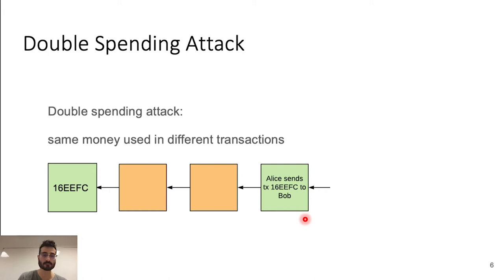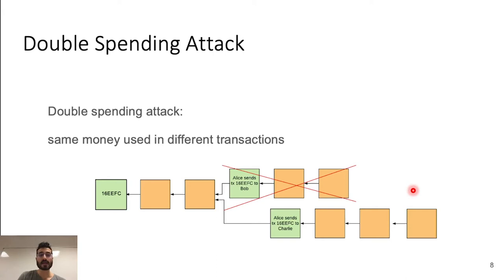Now the chain keeps growing, and after that, Alice decides to reclaim the same transaction to send this amount of money to Charlie. But now, this new transaction ends in another branch. And in the end, this branch is confirmed.